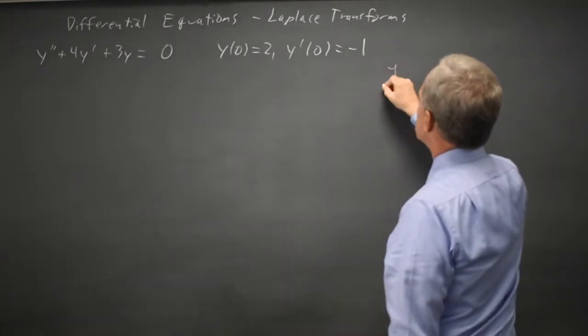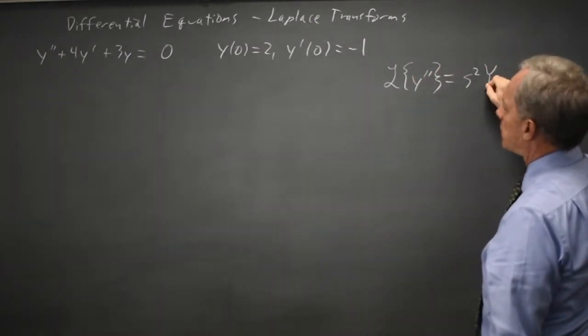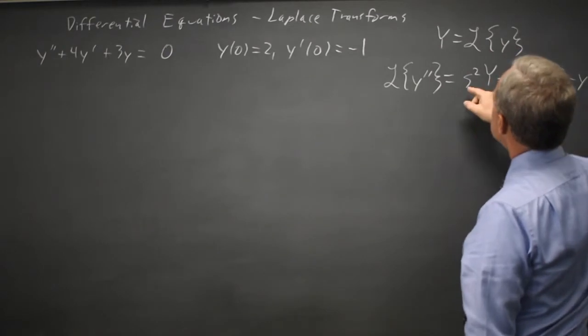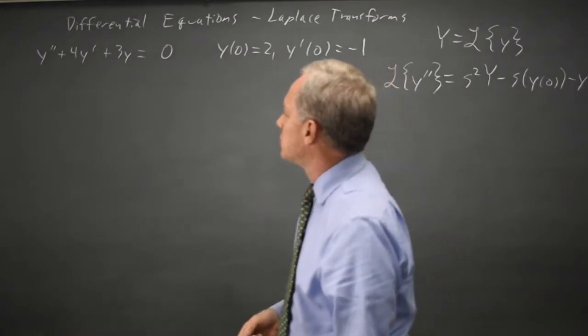I know that the transform of y double prime is s squared uppercase Y minus s times y of zero minus y prime of zero, where uppercase Y is a notation I'm using for the transform of lowercase y. It's just easier to write that one letter than the optional Laplace notation.